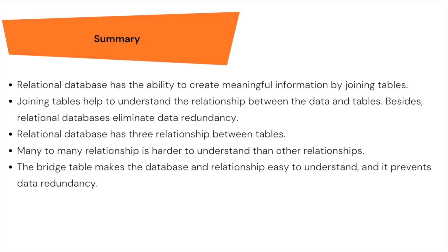Summary: relational databases have the ability to create meaningful information by joining tables. Joining tables helps understand the relationship between data. Relational databases eliminate data redundancy. There are three types of relationships between tables: one-to-one, one-to-many, and many-to-many. Many-to-many is harder to understand - always be careful before using this relationship. Bridge tables make the database relationships easy to understand and prevent data redundancy.